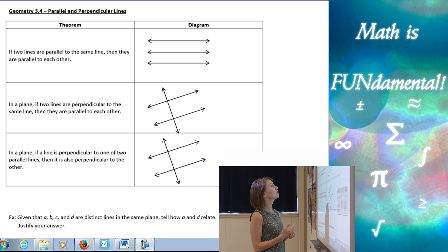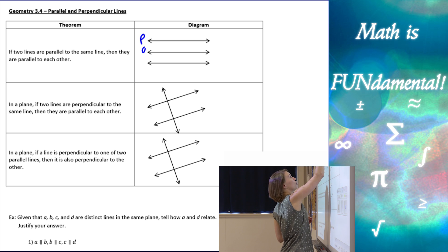All right, the first one says, if two lines are parallel to the same line, then they are parallel to each other. So, a little diagram to help us out. If we have P, Q, and R.